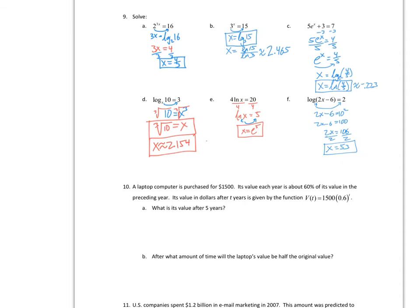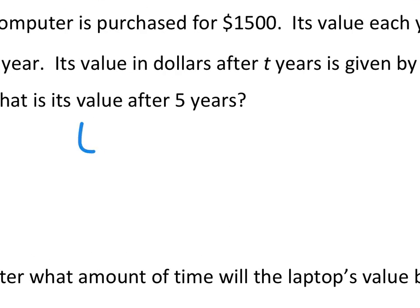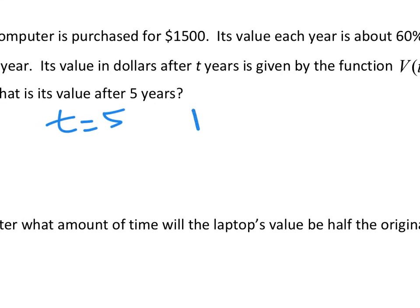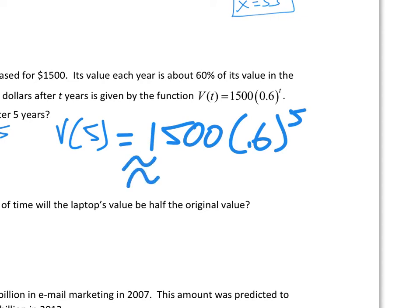Now an application problem with an exponential function. A laptop computer purchased for $1,500 loses about 40% of its value each year, so the function is V of t equals 1500 times 0.6 to the t. The question is: what is the value after 5 years? So t equals 5. We plug in: 1500 times 0.6 to the 5. That gives us about $116.64 — it drops quite a bit.